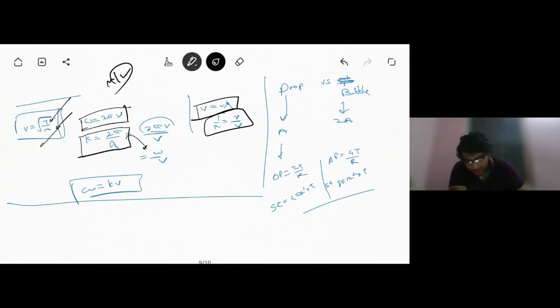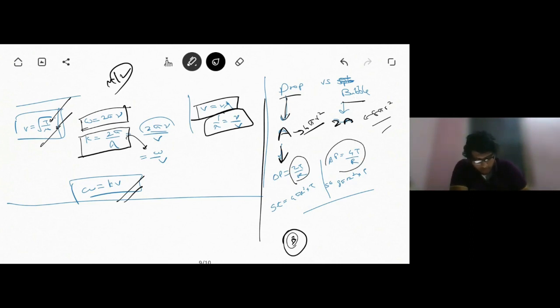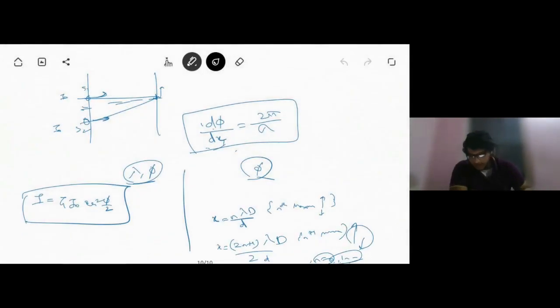Next, suppose we consider a drop and a bubble. In case of a drop, there is only one surface area A given by 4 pi r squared. In case of a bubble, there are two surfaces, so the area will become twice of it, 8 pi r squared. For a drop, the excess pressure inside is given by 2T by R, while for a bubble it will be double of it, 4T by R. Surface energy of a drop is given by 4 pi r squared into T, while for a bubble it will just be double of it, 8 pi r squared into T.